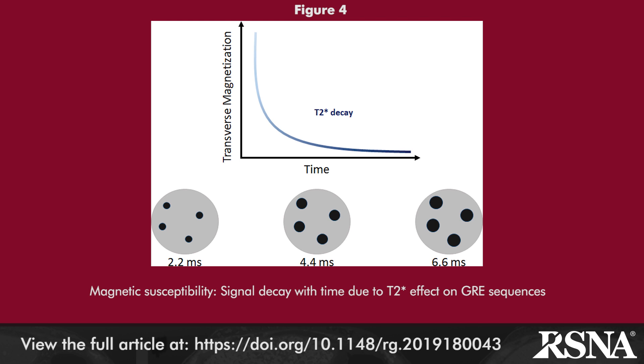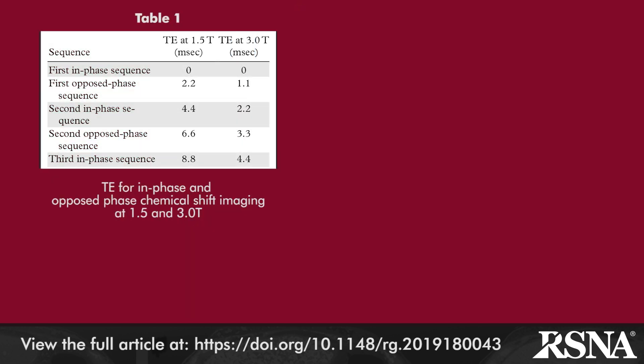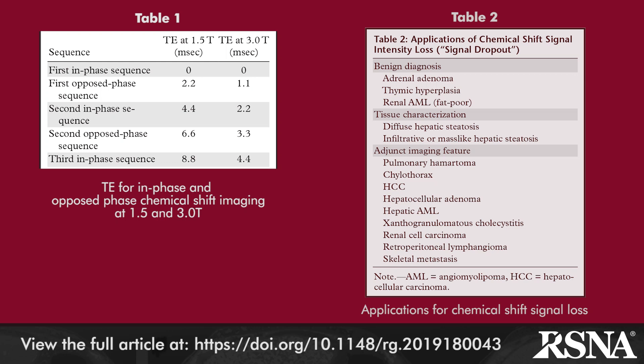After detailing echo times for in- and out-of-phase chemical shift imaging at 1.5 and 3.0 Tesla, the authors delve into the clinical applications of chemical shift signal intensity loss, which are listed in Table 2.